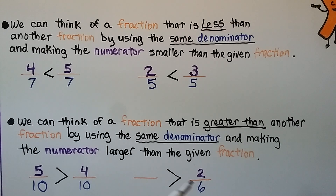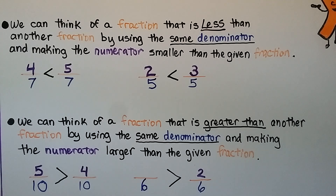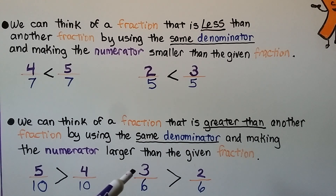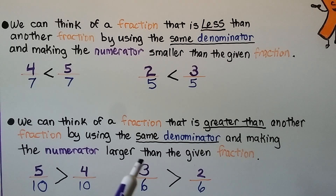What about this one? We have a 6 for a denominator. We need a fraction greater than 2 sixths, so we put our 6 as the denominator and think of a numerator greater than 2. I know 3 is greater than 2, so we could put a 3 here. But we could also put 4 sixths, 5 sixths, or 6 sixths — any of those would be greater than 2 sixths when they have the same denominator.